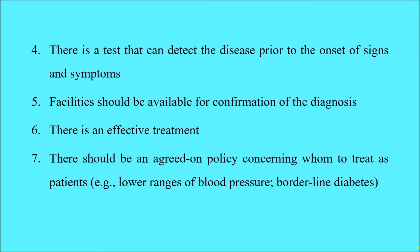There should be an agreed-upon policy concerning whom to treat as patients, because some screening test results are based on cutoff values. For example, with blood pressure estimation, normal blood pressure is systolic less than 120 and diastolic less than 80, while hypertension is systolic more than 140 and diastolic more than 90. Some people fall in between — systolic between 120 and 140, diastolic between 80 and 90. These people are neither normotensive nor hypertensive; they are called prehypertensives. We must decide whether to start medication or go for non-pharmacological management such as lifestyle modification, dietary changes, or physical exercise.